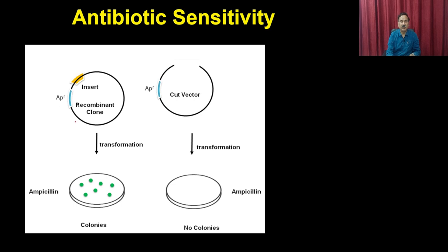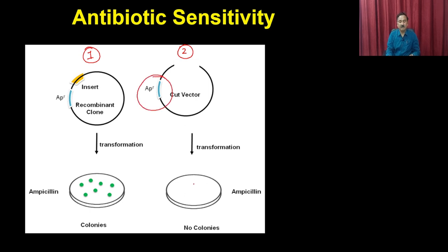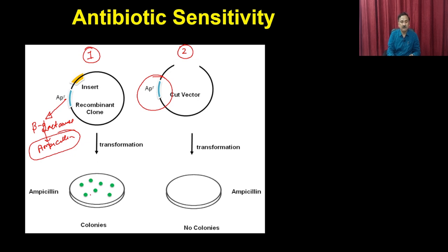You have two different types of vectors: the circularized vector with recombinant insert and ampicillin resistance, and the cut vector. Both are transformed, but since the cut vector is not circularized, it cannot replicate and does not give colonies on ampicillin plates. The circularized recombinant clone has a functionally active ampicillin resistance gene expressing beta-lactamase, which degrades the ampicillin in the plate, allowing this particular bacteria to grow and give colonies.